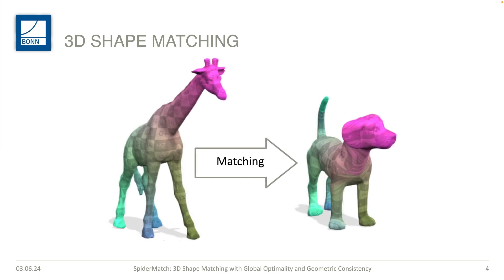To visualize correspondences between shapes, we basically transfer color from one shape to the other shape. For example, we color the nose of the giraffe pink and we transfer this pink color to the corresponding vertex on the nose of the dog, and thus the nose of the dog is also pink.